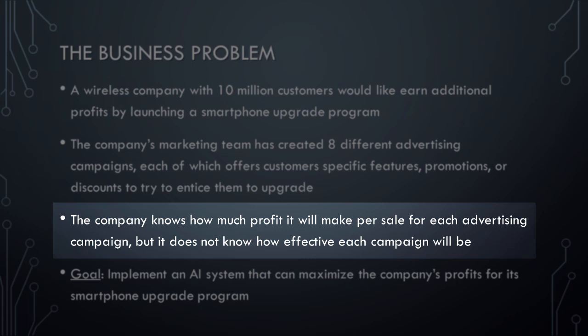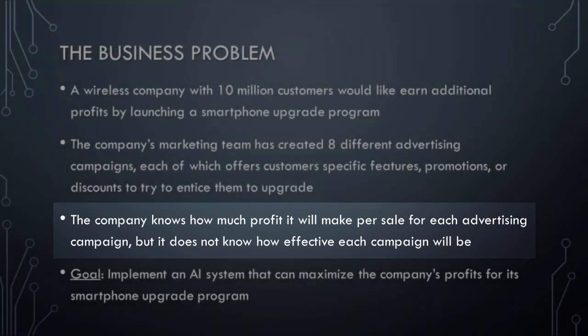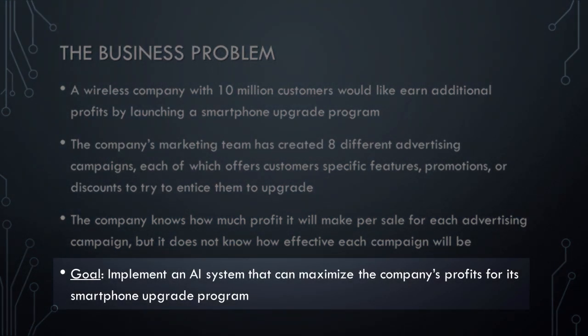What the company does not know is how effective each campaign will be. One or more advertising campaigns may be very effective, while others may not work well at all. Our goal, then, is to build an AI system that can maximize the company's profits for its smartphone upgrade program. Note that this is very different than simply trying to maximize the number of customers that participate in the smartphone upgrade program, because maximizing profit will be a function not only of the number of customers that see each advertising campaign, but also of the effectiveness of each campaign in generating sales and the average profit per sale for each campaign.